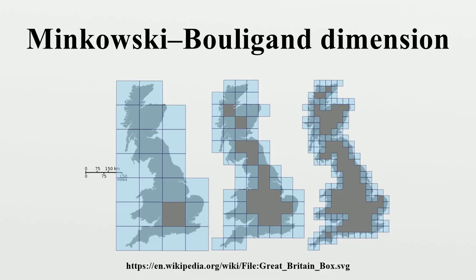The upper and lower box dimensions are strongly related to the more popular Hausdorff dimension. Only in very special applications is it important to distinguish between the three. Yet another measure of fractal dimension is the correlation dimension.